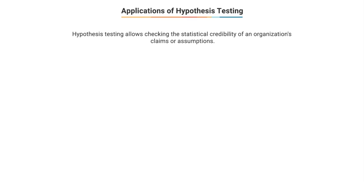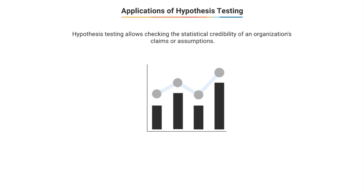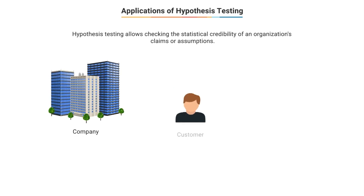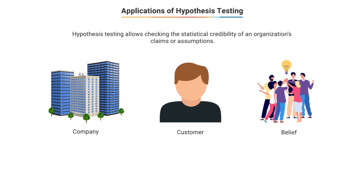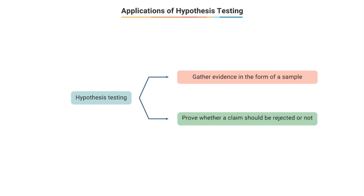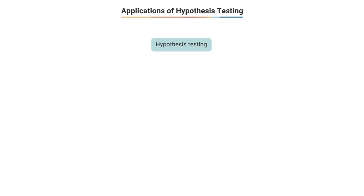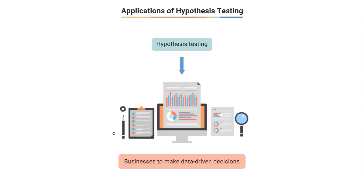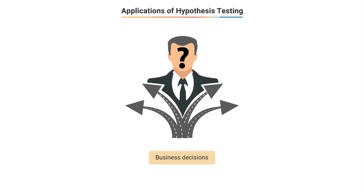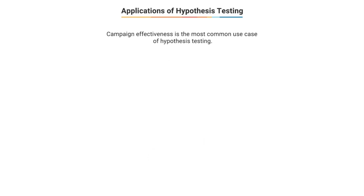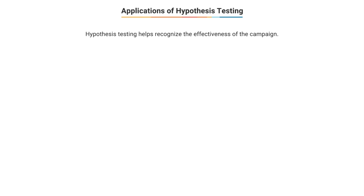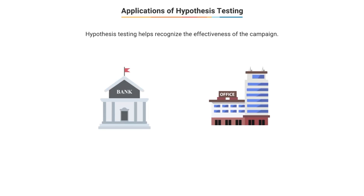Hypothesis testing allows you to check the statistical credibility of claims or assumptions that your organization has come up with. This claim could be made by a company, a customer, or just a form of popular belief. Using hypothesis testing you can gather evidence in the form of a sample and then prove whether this claim should be rejected or not. As a result, hypothesis testing has been used in many businesses for making data-driven decisions rather than just relying on hunches.